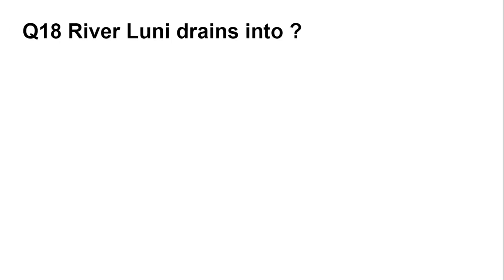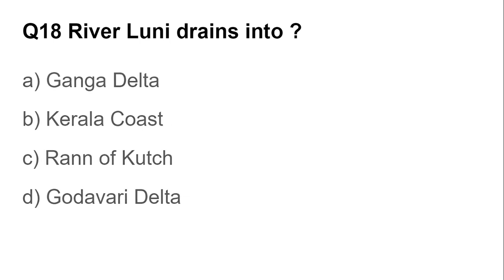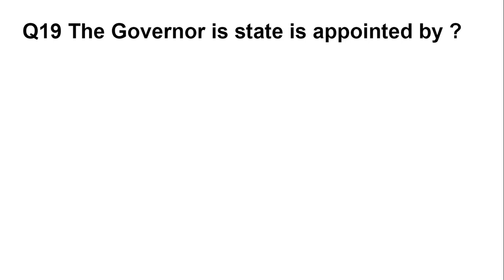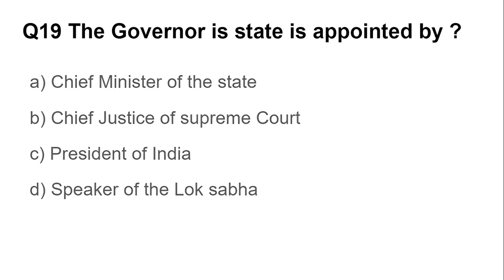Question number eighteen/nineteen: River Luni drains into — options are Ganga Delta, Kerala Coast, Rann of Kutch, and Godavari Delta. The answer is Rann of Kutch. Question number nineteen: The Governor of a state is appointed by — Chief Minister, Chief Justice of Supreme Court, President of India, or Speaker of Lok Sabha. The answer is President of India.